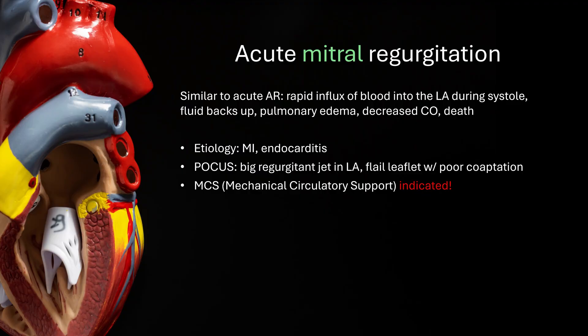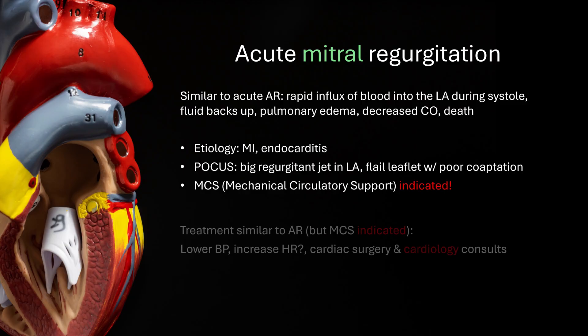Now for mitral regurgitation specifically — it's similar to aortic regurgitation in that fluid is backing up, but now it's in the left atrium. It still causes pulmonary edema, decreased cardiac output, and death. The etiology is slightly different, now including MI and endocarditis. POCUS will show a big regurgitant jet in the left atrium and a flail leaflet with poor coaptation of the mitral valve. Mechanical circulatory support is now indicated since you likely have a competent aortic valve. Treatment is similar, but a cardiology consult may be helpful for some interventional procedures.